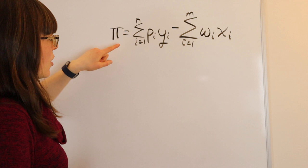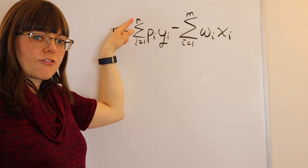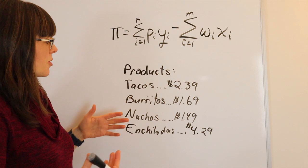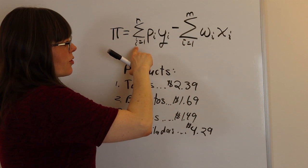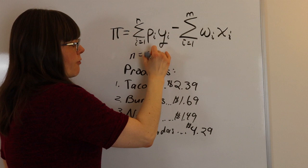So we're adding up these products i equals one to n, meaning we have n different output products that we're trying to create. If this is the total list of products that Taco Bell sells, in which case we have four different products and we could number them one, two, three, four. And that number is going to be associated with the i here. So we're going to go through i equals one through i equals n, and in this case n equals four, we produce four products.